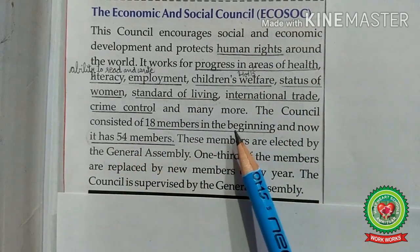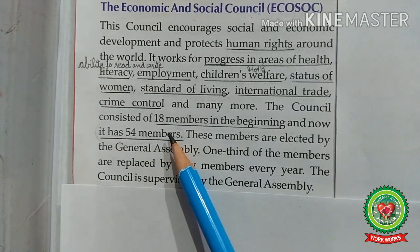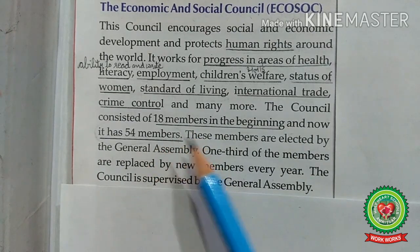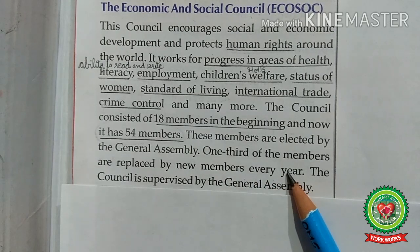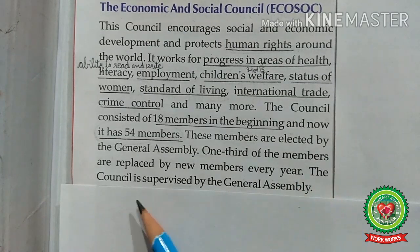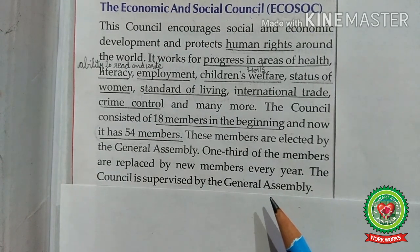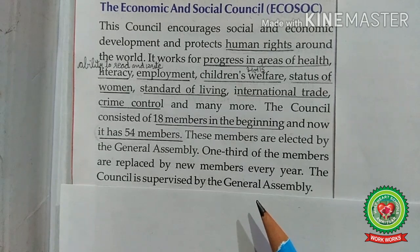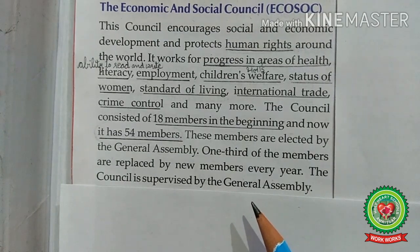The council consisted of 18 members in the beginning and now has 54 members. When it was formed in 1945, there were only 18 members, but now there are 54. These members are elected by the General Assembly, and one third of the members are replaced by new members every year. The council is supervised by the General Assembly. Overall, the Economic and Social Council deals with economic, social, and cultural problems, and tries to promote cooperation among member states to secure lasting peace in the world.